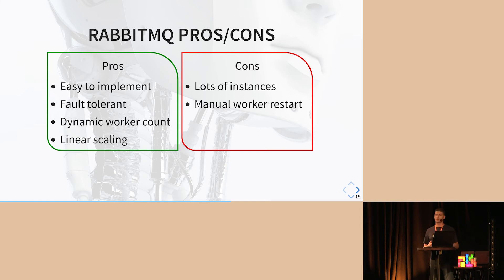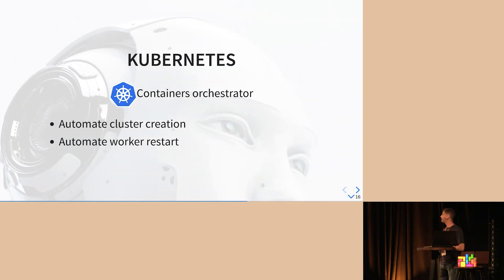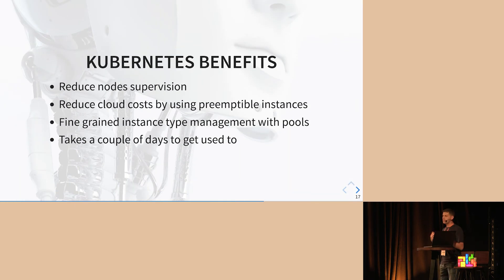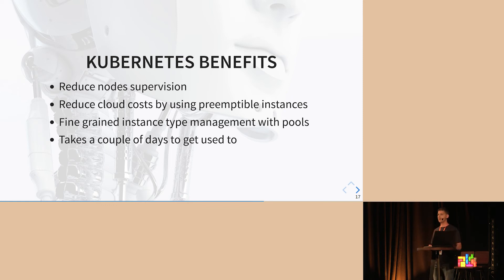The problem is now we don't have only one machine or one script running — we have multiple instances, and some of them can fail, and we have to restart them manually. Can we do better? Yes. You have heard about Kubernetes in the previous talks, and we also use Kubernetes here. We use it to automate the cluster deployment and also to monitor the nodes and automate the worker restart. With Kubernetes, it brings many improvements. The main one is we are now able to use preemptible instances or spot instances for the workers and reduce drastically our cloud costs.